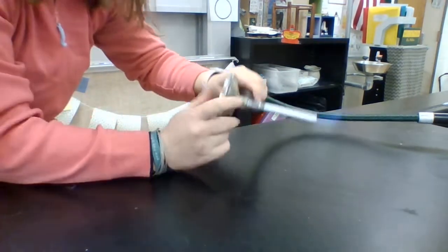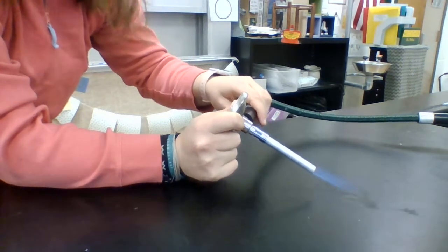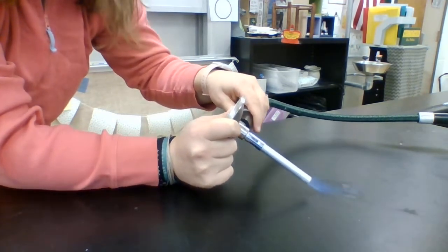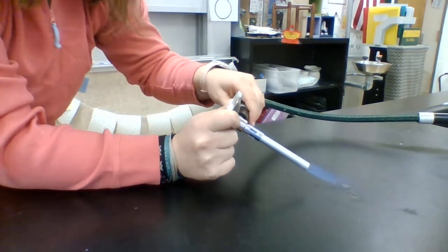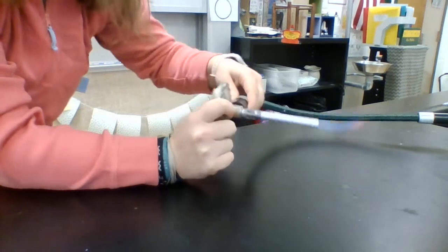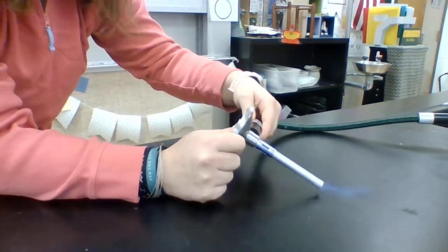This is literally water coming off of the Bunsen burner because water is formed in a combustion reaction. We can prove that there was water present. The gas that's coming off is CO₂, and then the energy is the flame itself coming off of here.